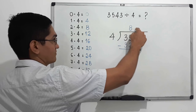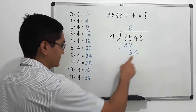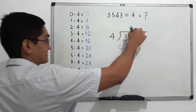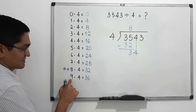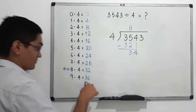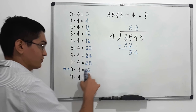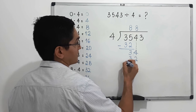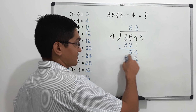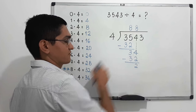We ask the same question: what number from zero to nine do we multiply by four to get 34, or almost 34 but not more than 34? Since nine times four equals 36, which is greater than 34, we stay with eight again. Since eight times four equals 32, we write 32 below 34 and subtract. 34 minus 32 equals 2.